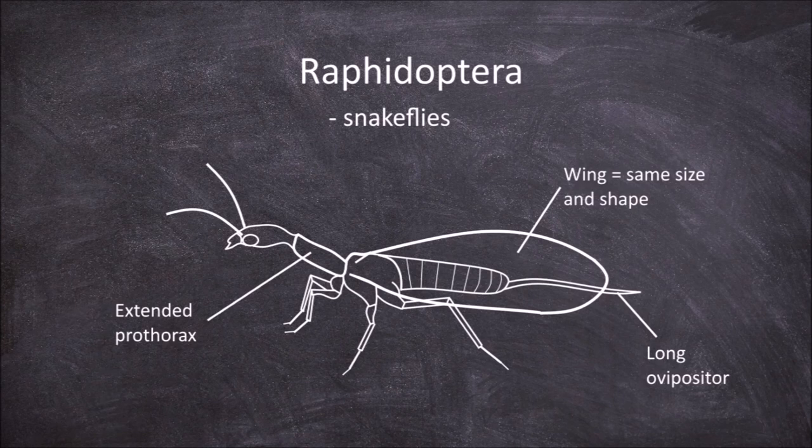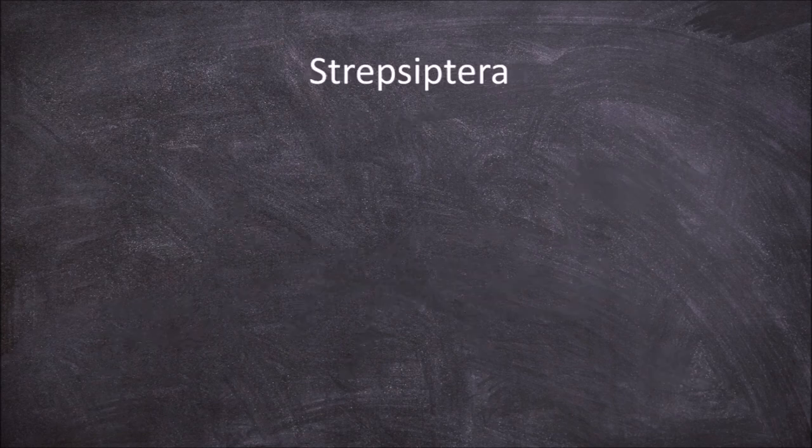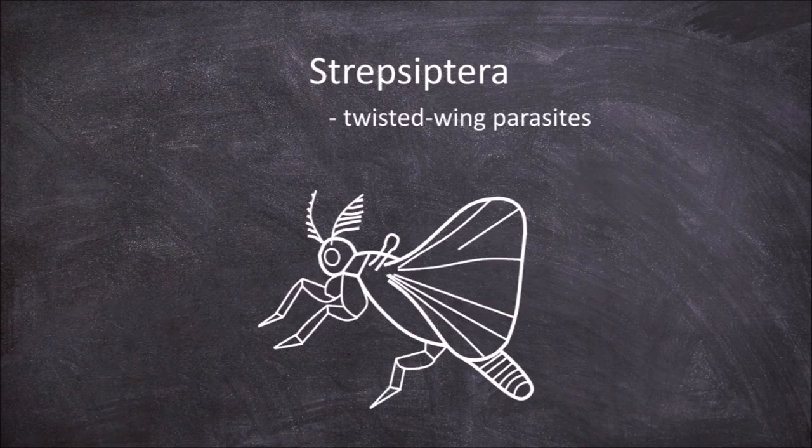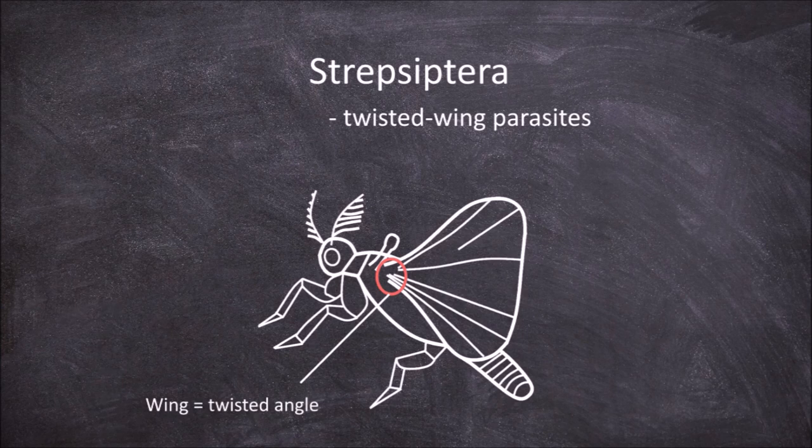The next order is the Strepsiptera, which are the twisted wing parasites. The characteristic feature of this order is observed in the males — it is the twisted angle at which the hindwings are held at rest. The forewings in males are reduced to halteres.